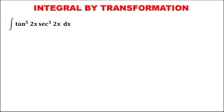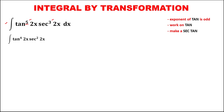From this given, this satisfies the condition that the exponent of tangent is an odd number. Therefore, we need to work on tangent, and we need to have secant times tangent. So we take one from tangent and one from secant, so tangent to the power 5 becomes tangent to the power 4 and secant to the power 3 becomes secant to the power 2.